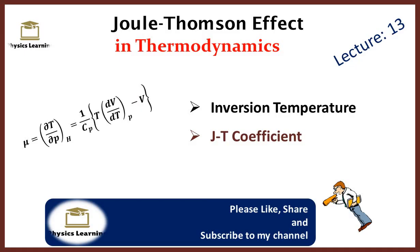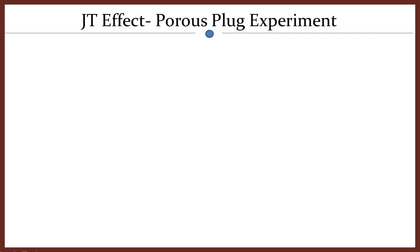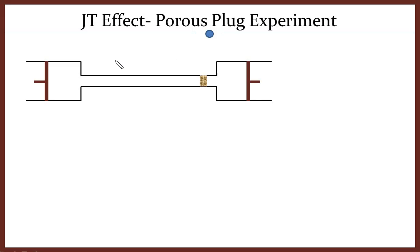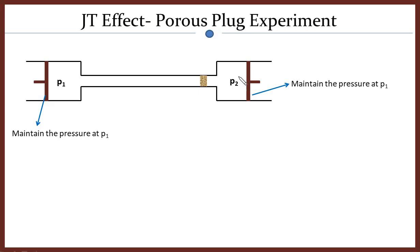The Joule-Thompson effect can be understood from a simple experiment which we call the porous plug experiment. This is the simplest schematic diagram for this experiment. It contains two compartments separated by a porous plug. The pressure in compartment 1 is maintained with the help of a piston or a compressor at constant pressure P1, and the pressure in compartment 2 is maintained at constant pressure P2.